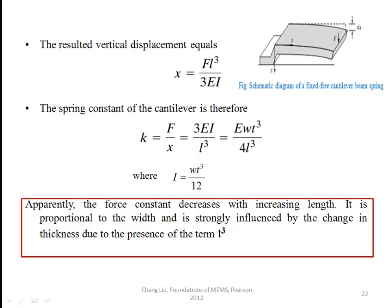The final equation is k = Ewt³/(4l³). As length increases, the spring constant decreases. Spring constant depends on width and thickness, and it is proportional to t³, so spring constant is directly proportional to thickness cubed.